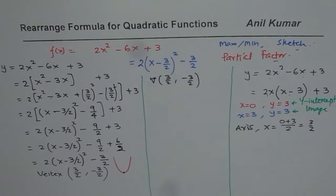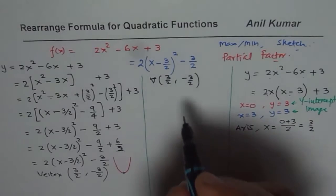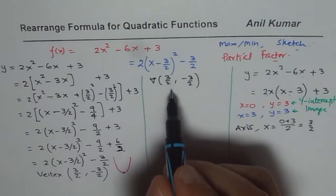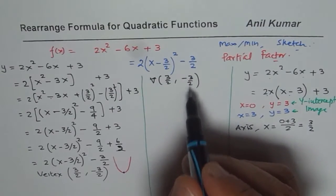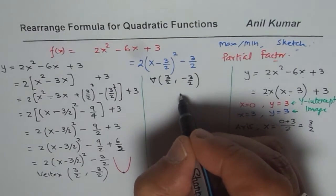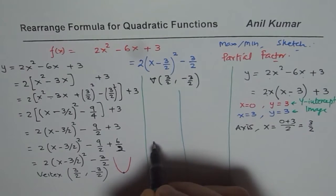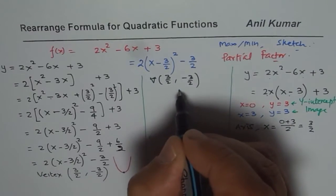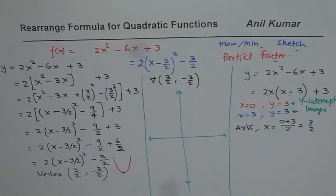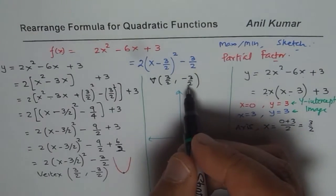Now, let's get back to the question. Here we have vertex at 3 over 2, which is positive, and the value is minus 1.5. Now, let us see how to sketch this function. So let me just draw the axis.